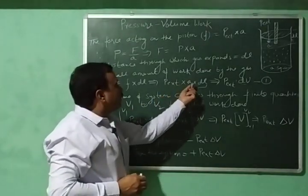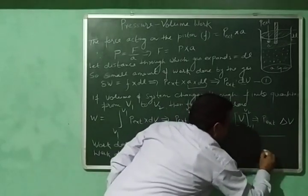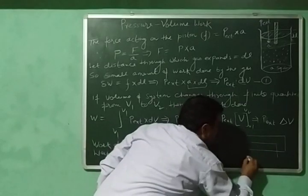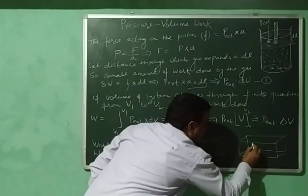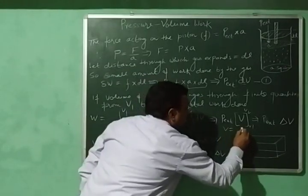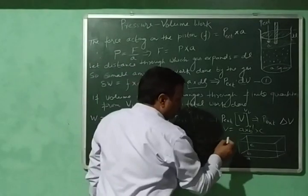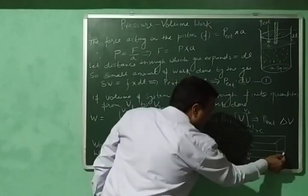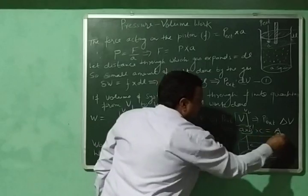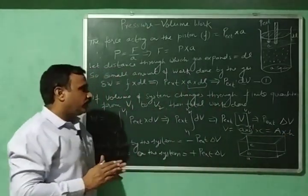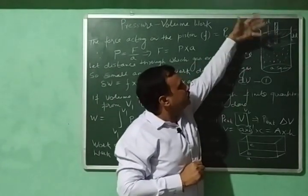To understand how area times height equals volume, let us take a cuboid. Its sides are A, B, and C, so its volume equals A into B into C. The quantity A into B is the area of the rectangular face. So volume equals area of the rectangular face into C, where C is the height. Therefore, volume equals area into height. Here, small A is the area and dL is the height through which the piston has moved.